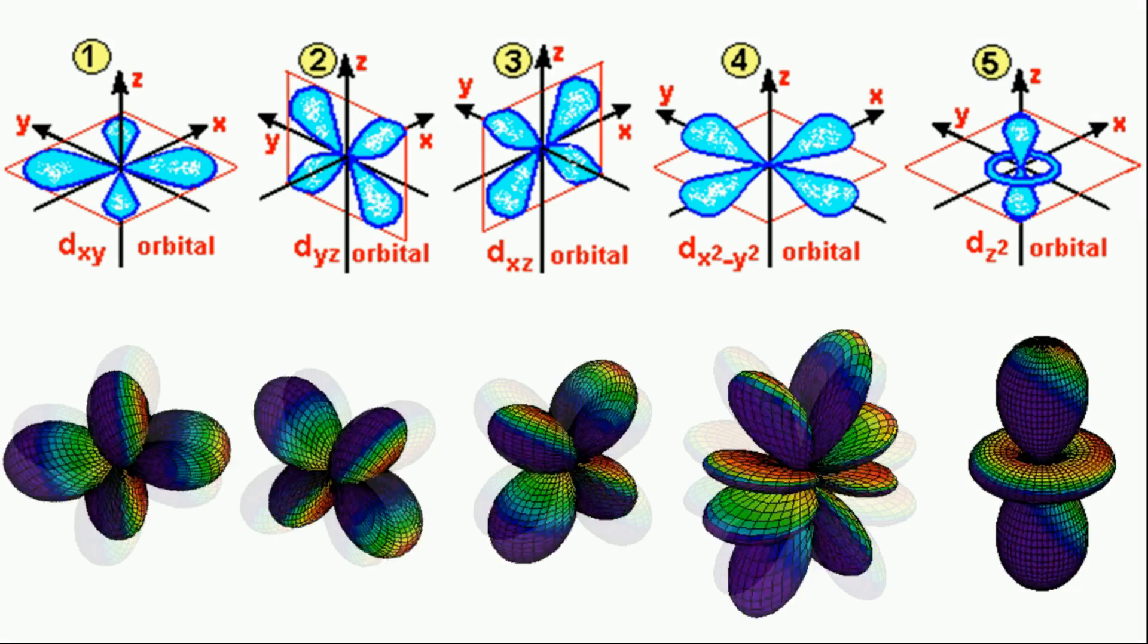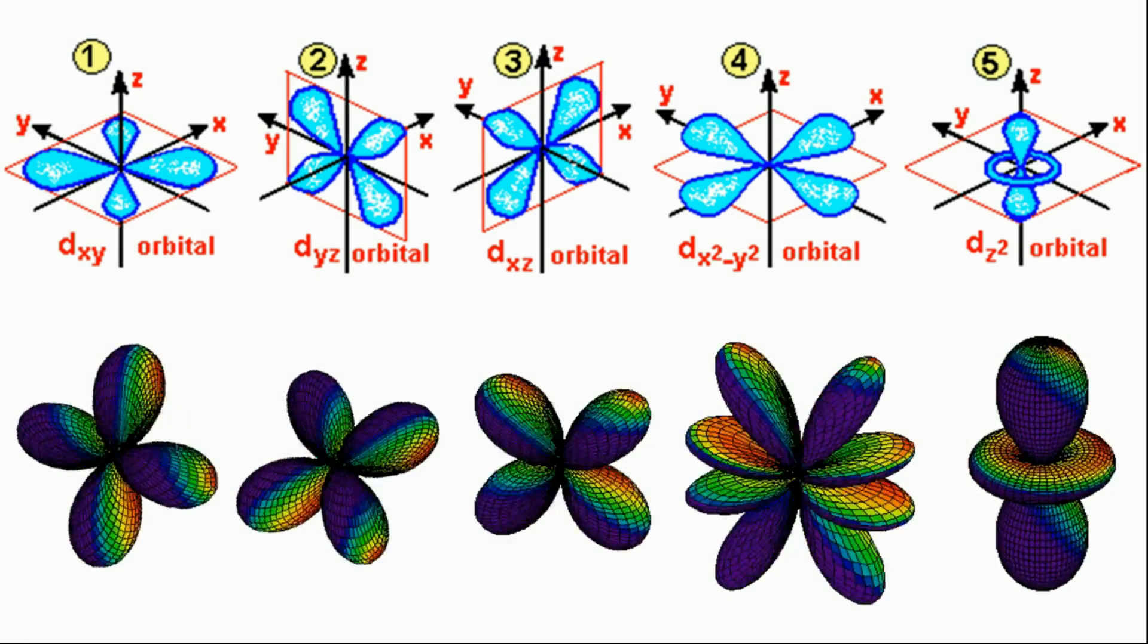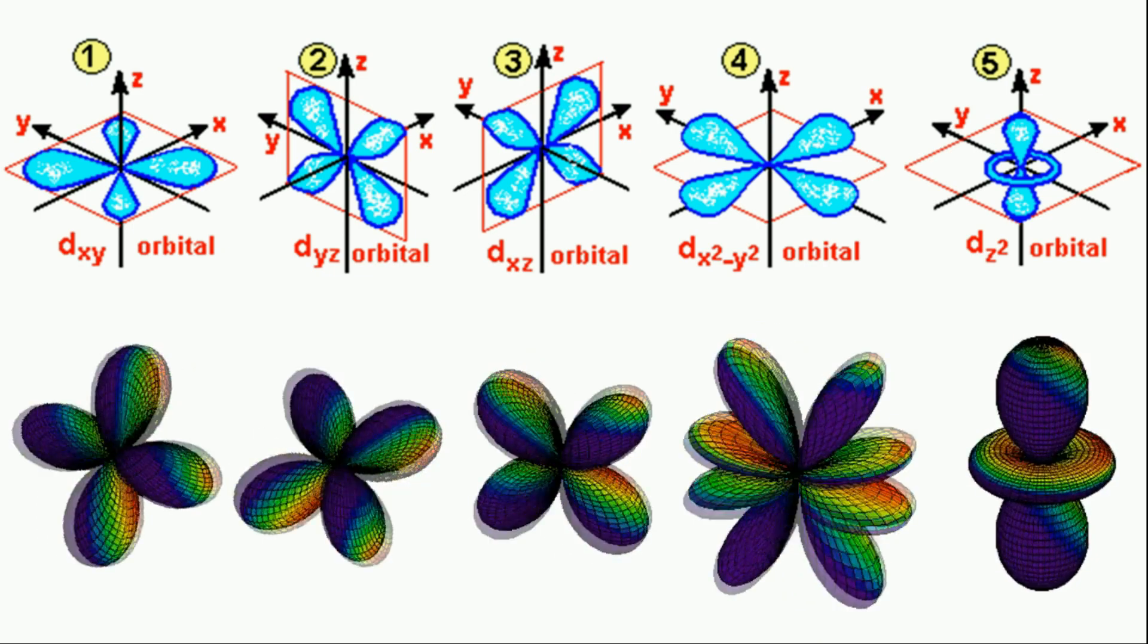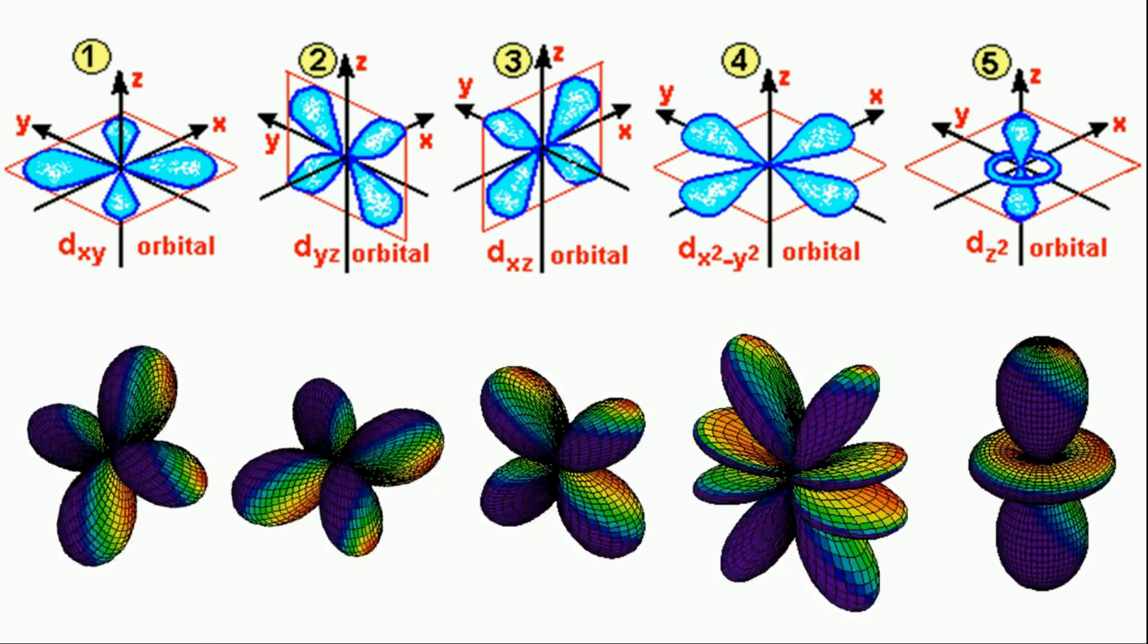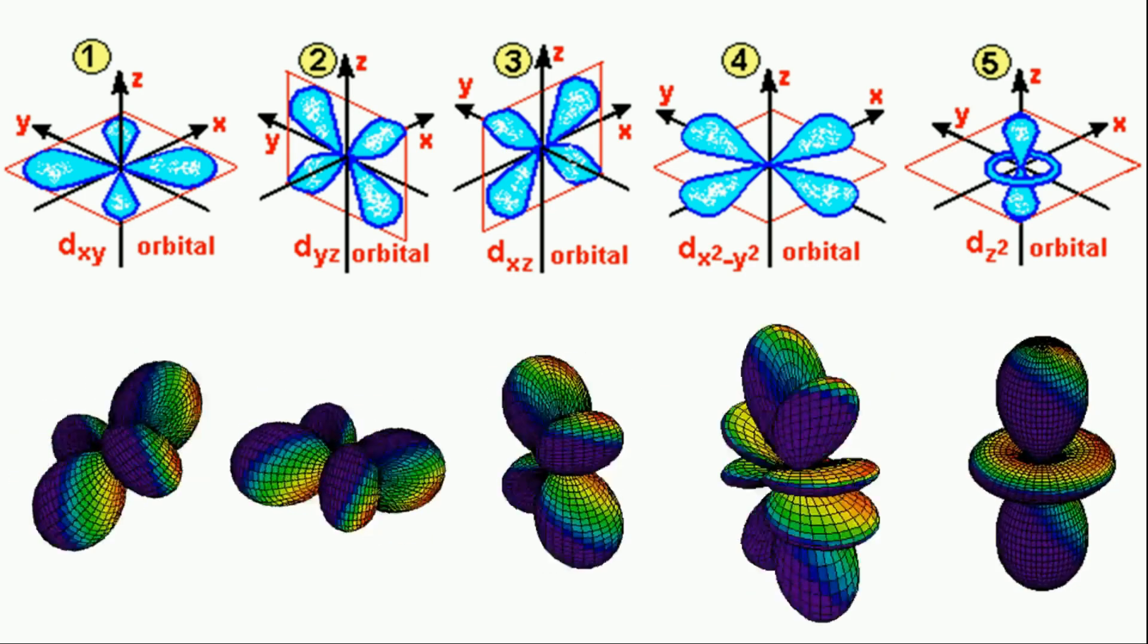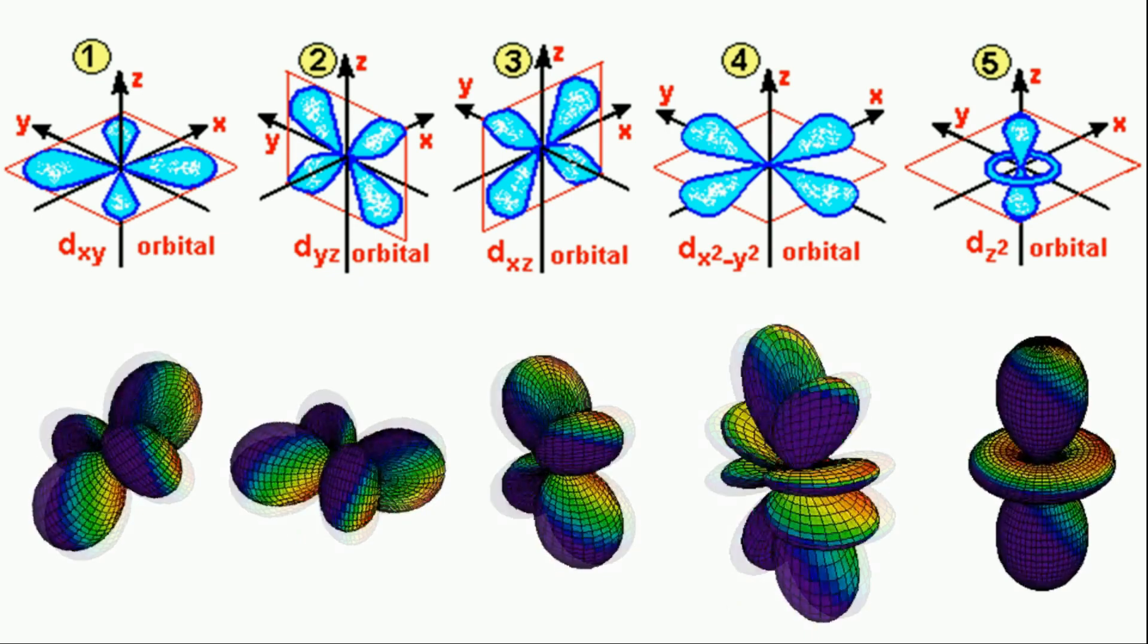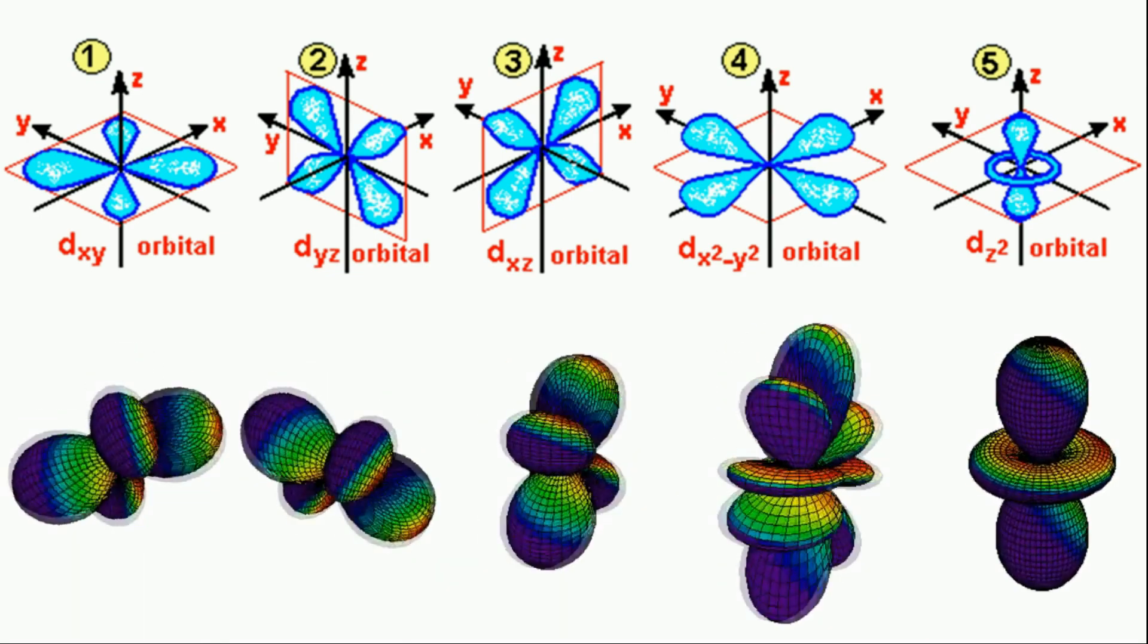For example, the dxy orbital has loops that point between x and y axes. No loops actually point in the x or y direction. It is really important that you understand that. You can observe dxy, dyz and dzx all look the same.